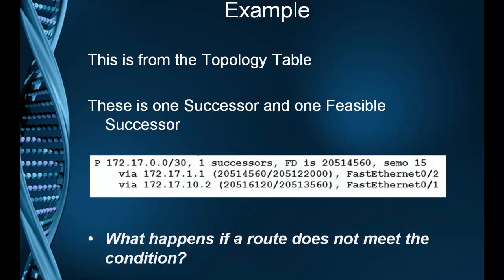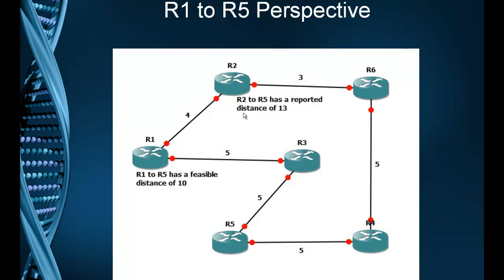What happens if a route does not meet the feasibility condition? Back to our topology table: from R2 to R5 he has a reported distance of 13, but from R1 to R5 we have a feasible distance of 10. Looking at it from R1's perspective, the feasible distance is 10 but the reported distance is 13. This means that the path from R2 to R6 to R4 to R5 will not show up in the topology table, and it will not become a feasible successor.